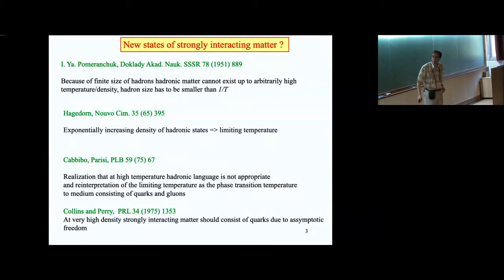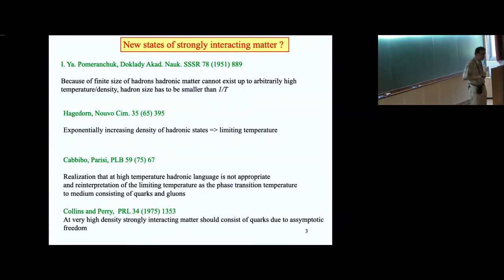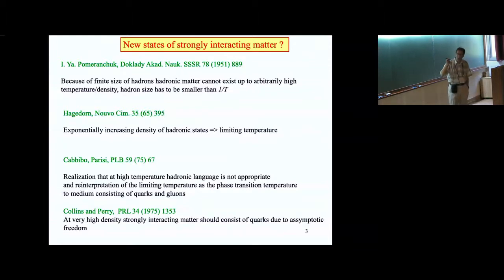If the temperature is too high and hadronic description doesn't work, one should think about quark degrees of freedom, because you're entering the phase where quarks become weakly interacting due to asymptotic freedom. You should think of the limiting temperature as a transition temperature from hadronic degrees of freedom to quark degrees of freedom. Similarly, Collins and Perry argued that if you increase the density beyond a certain point, because of asymptotic freedom the quarks would be the proper degrees of freedom — a dense quark gas.